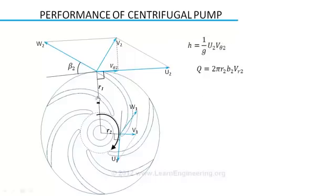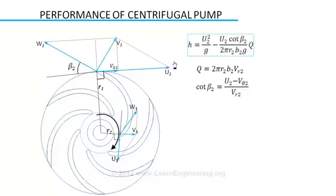Blade angle can be easily derived like this. You can easily substitute a value for V theta using these two equations. Finally we get most important performance equation of centrifugal pump: how energy head is varied with flow rate.